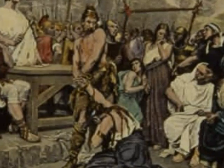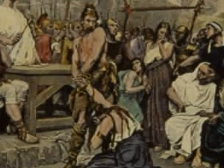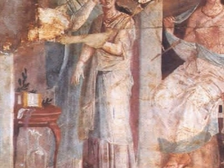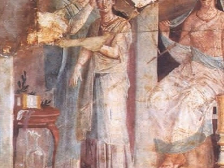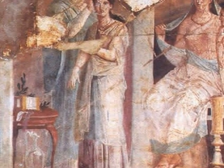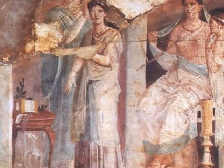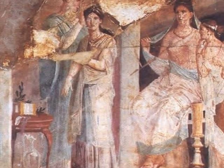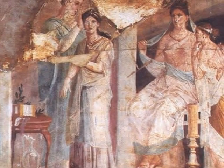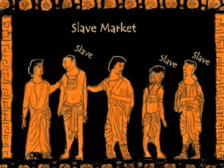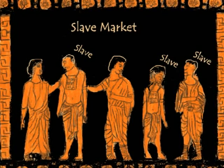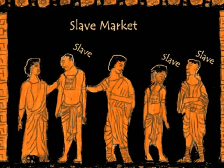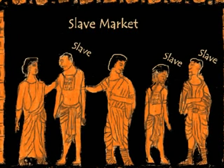Wealthy families usually owned many slaves. As the slave population grew and their use in the Roman world spread, many poor citizens of Rome were put out of work, especially those on the family-run farms. But this did not hinder the slave population at all.